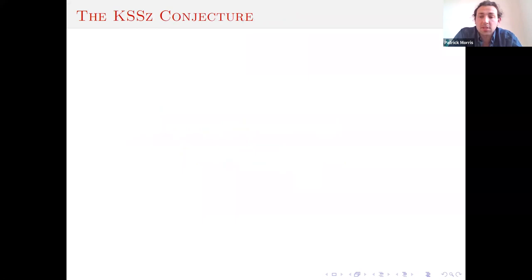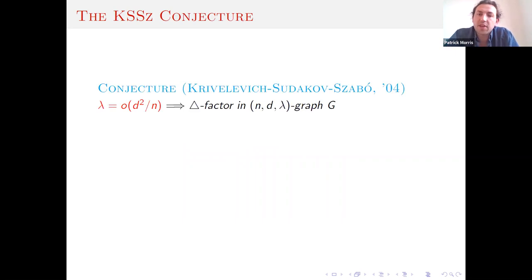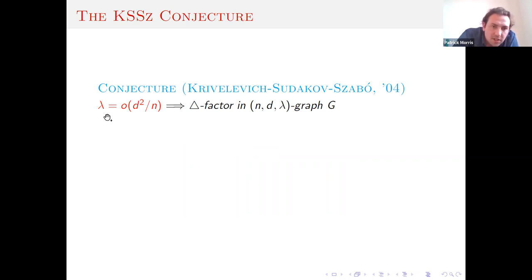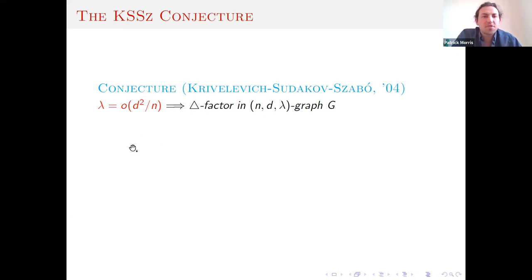Now we have this concept of pseudorandomness. You can ask what conditions on the pseudorandom parameters guarantee a certain property — for example, containing a triangle factor. This was conjectured by Krivelevich, Sudakov, and Szabo in 2004: that the condition lambda = o(d²/n) would force a triangle factor in an NDλ graph.